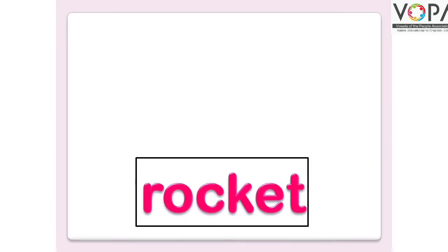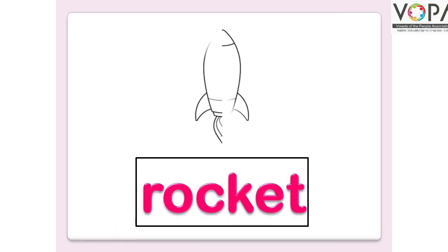Second box है बच्चों। Second box में वर्ड है — Rocket. क्या है? Rocket. R-O-C-K-E-T. Rocket. जाहिर है, आपको इस खाली जगह में क्या बनाना होगा? Rocket बनाना होगा, इस तरह से। Rocket.